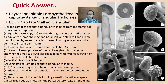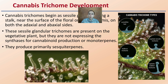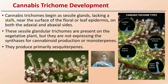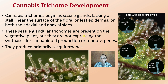Basically, trichomes are what we're looking at here. Looking at trichome development: sessile trichomes are glands lacking a stalk, and they start near the surface of the floral or leaf epidermis — the outer skin on both the adaxial and abaxial sides, top and bottom of the leaf surface. These sessile glandular trichomes are present on the vegetative plant, but they are not expressing the synthesis for cannabinoid production or monoterpenes. They produce primary sesquiterpenes there, kind of the early early stages.